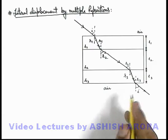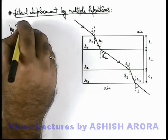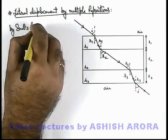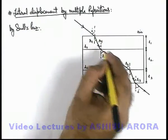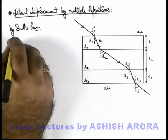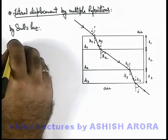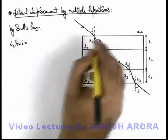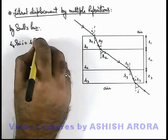Because of Snell's law, we can write by Snell's law here, at every point, as there are four points where refraction is taking place, we can write μ of air multiplied by sin i is equal to μ1 sin r1.